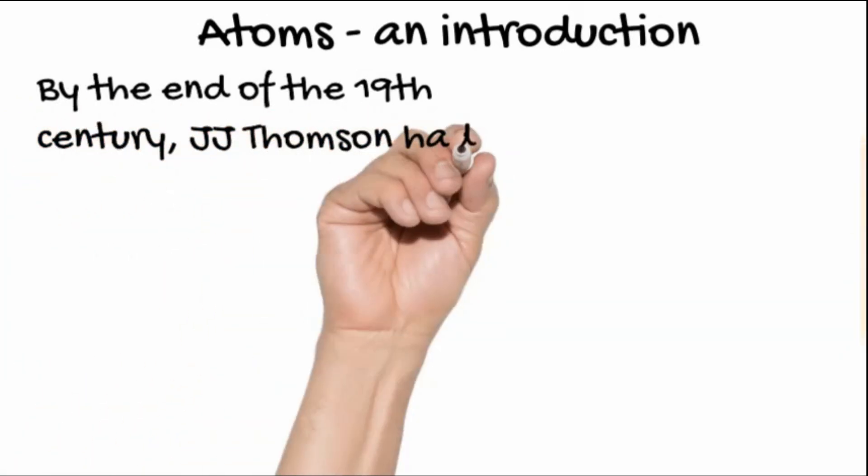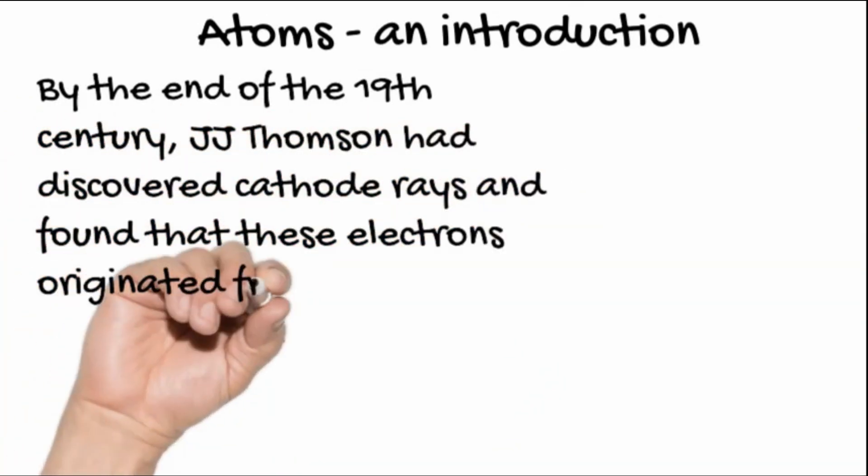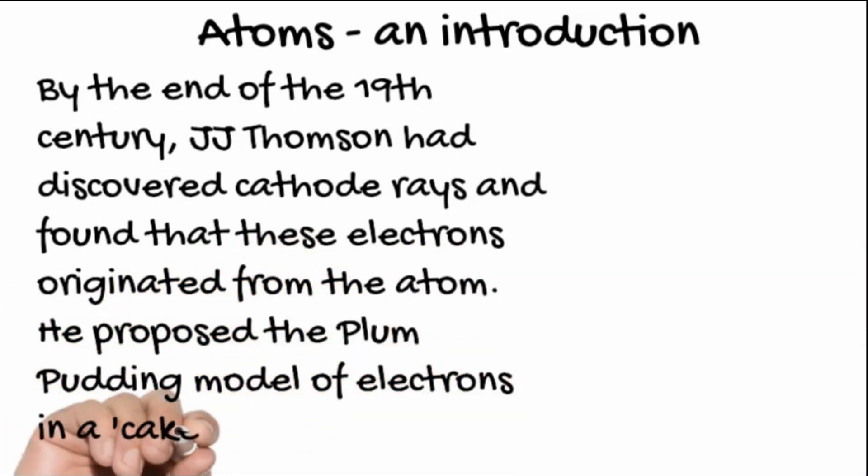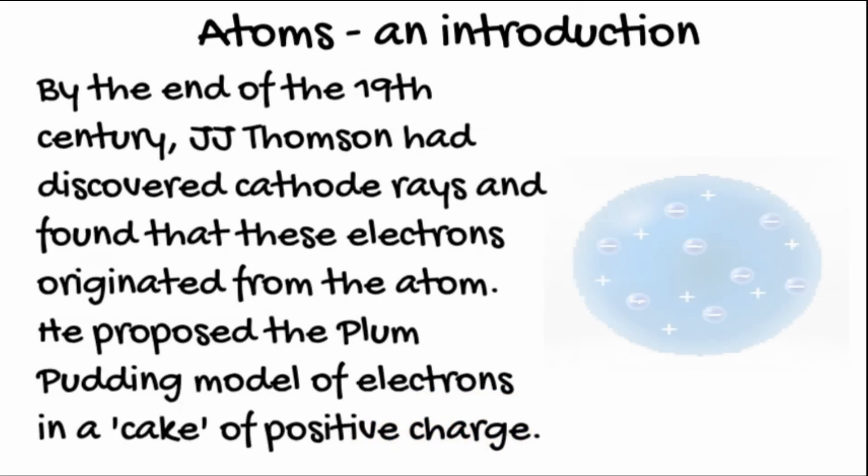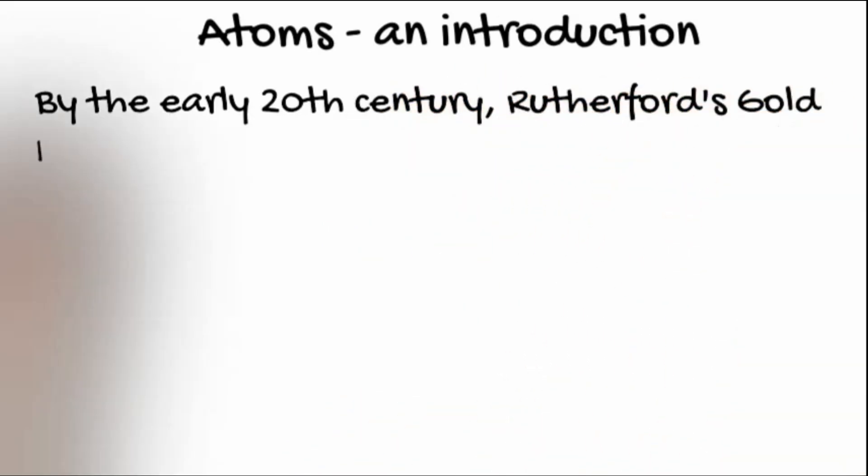By the end of the 19th century, J.J. Thompson had discovered cathode rays. These cathode rays were made of electrons originating from the atom. Thompson proposed a plum pudding model of electrons embedded in a positive cake.